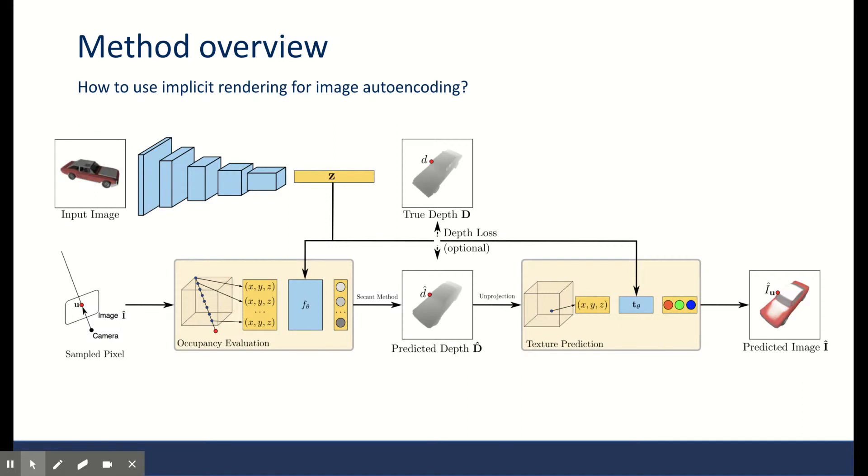Now the full texture rendering algorithm is as follows. So far, we have passed the image through an encoder to get the conditioning representation Z. Also for a pixel position and camera position, we have figured out the surface depth D using the implicit occupancy function. Now we pass the 3D surface point through the texture implicit function and get the RGB value for that pixel. We have a full cycle from image to image. Given the camera matrix for the input image, we can then train the model to optimize the loss between the predicted image and input image.